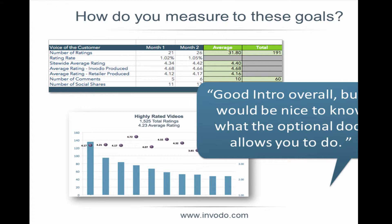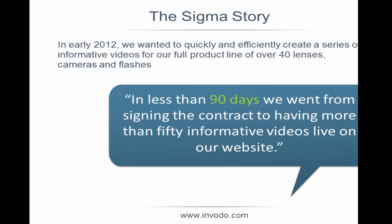How many people here are familiar with Sigma? Sigma Corporation of America is a subsidiary of Sigma Corporation of Japan. We are the largest independent lens manufacturer on the planet. We make lenses for Canon, Nikon, Sigma, Panasonic, Pentax, and Olympus cameras. We have a line of about 45-plus lenses in market, aimed at everyone from beginners to super-specialized pros, priced from about $200 up to $28,000-plus. In early 2012, it was thrown to me to get a video program up and live on all of our product pages as quickly as possible.